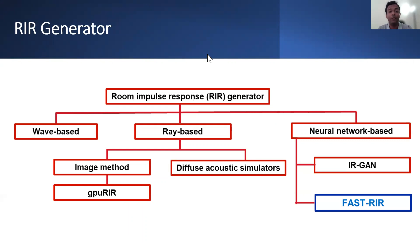Image method and diffuse acoustic simulators are commonly used ray-based methods in speech-related tasks. The image method only models specular reflections, while diffuse acoustic simulators model both specular and diffuse reflections. GPU RIR is a variant of the image method which is optimized to dramatically improve computation speed by using GPUs.